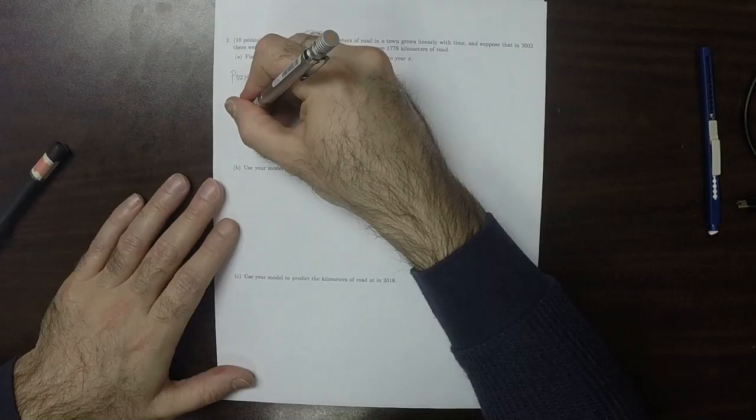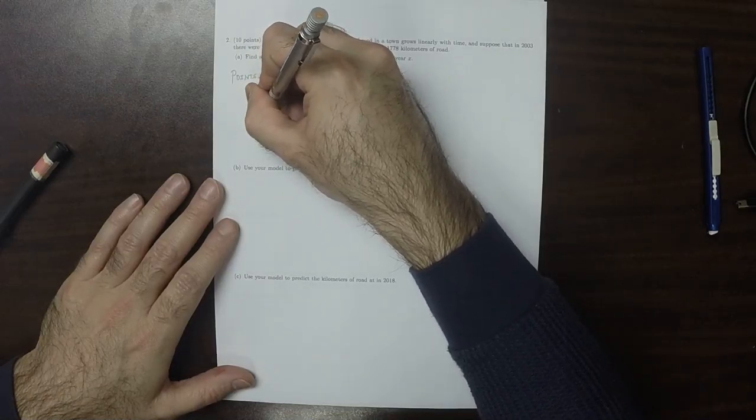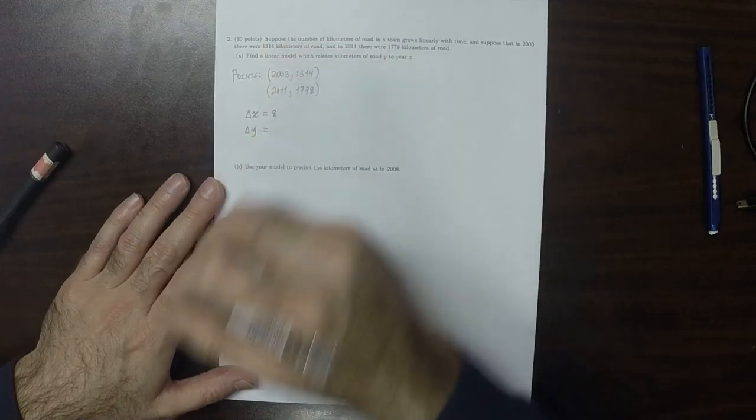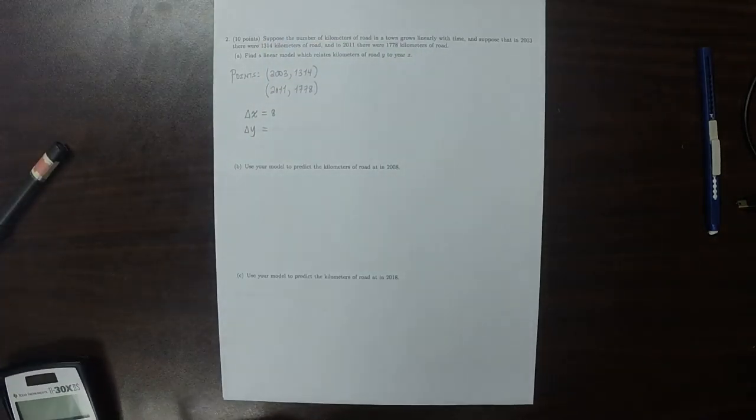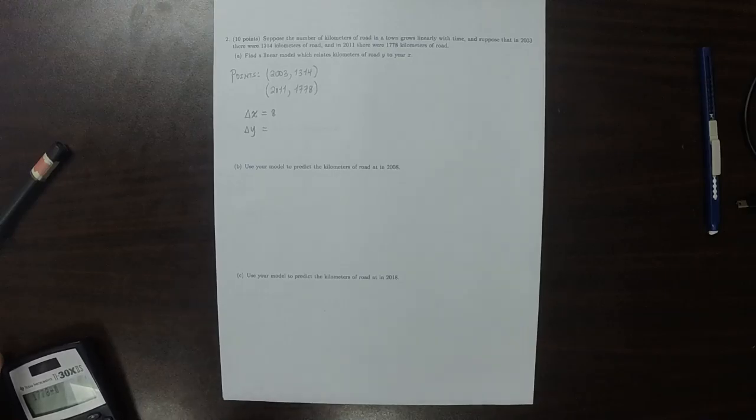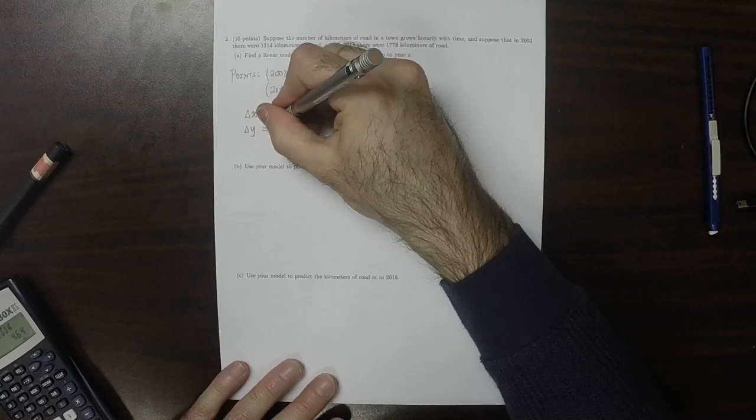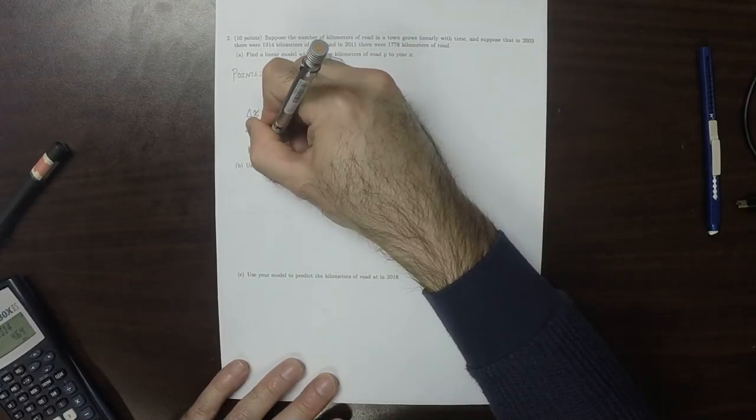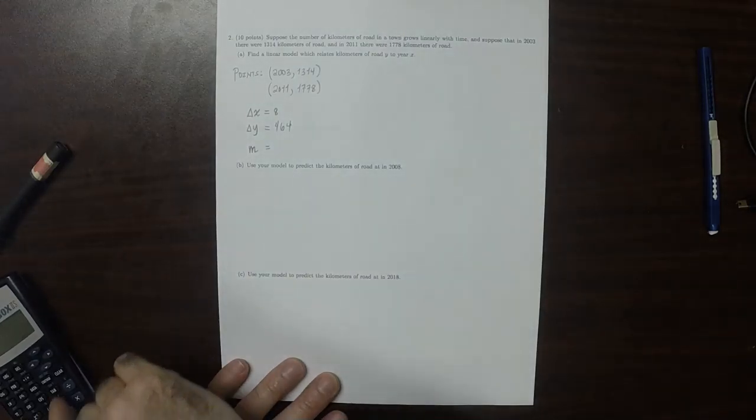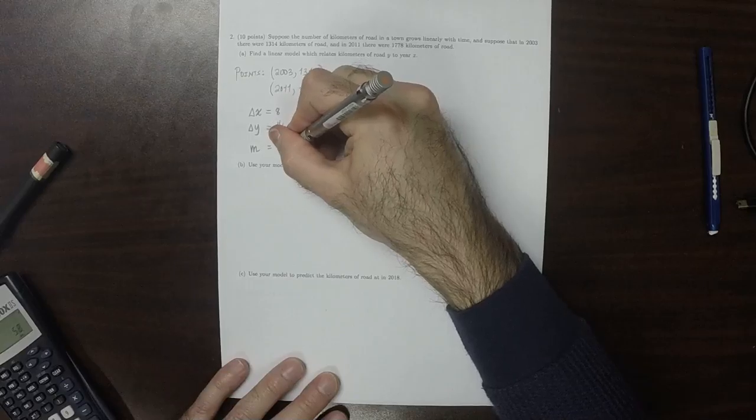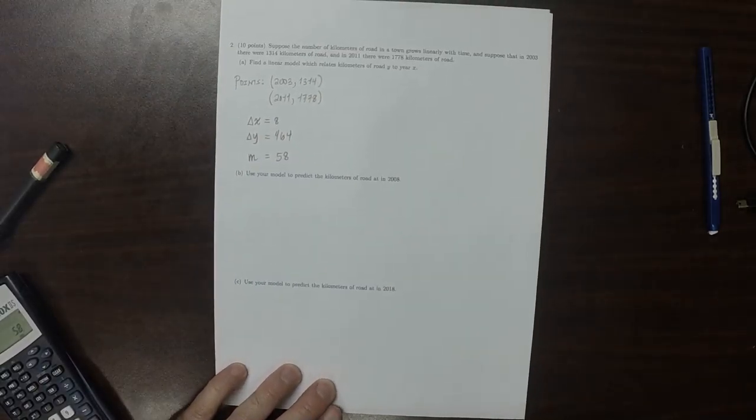So the change in x is 8. The change in y is 1,778 minus 1,314, which is 464. And therefore, the slope is the ratio of those two, so 464 over 8 is 58.